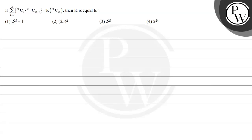Hello. Let's read the given question. The question states that if summation of 50Cr multiplied by (50 minus r)C(25 minus r), where r is varying from 0 to 25, is equal to k times 50C25, then k is equal to: option 1 is 2 to the power 25 minus 1, option 2 is 25, option 3 is 2 to the power 25, option 4 is 2 to the power 24.